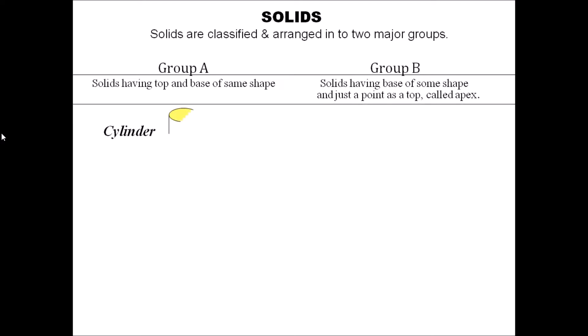Cylinder we are keeping in Group A, where we see always the base shape and the top shape remains the same as a circle. In prism, there are many shapes available.